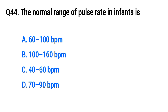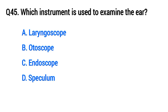Question 44: The normal range of pulse rate in infants is... The right option is B, 100 to 160 BPM.